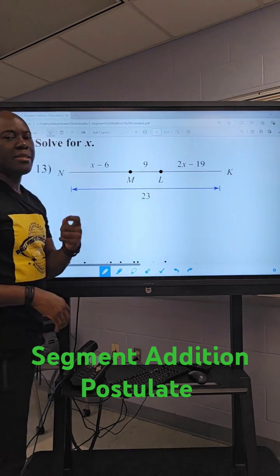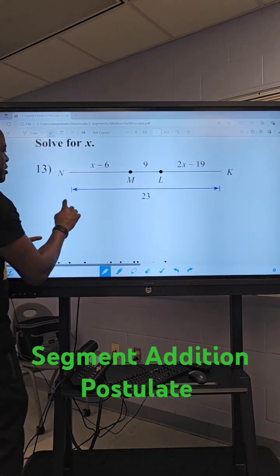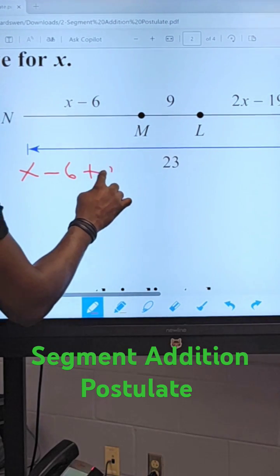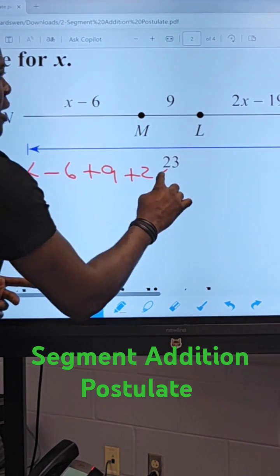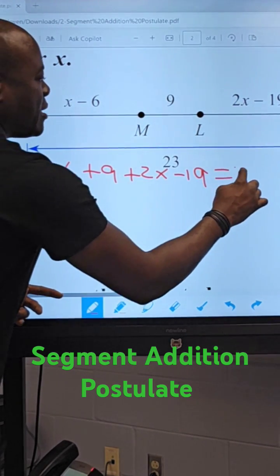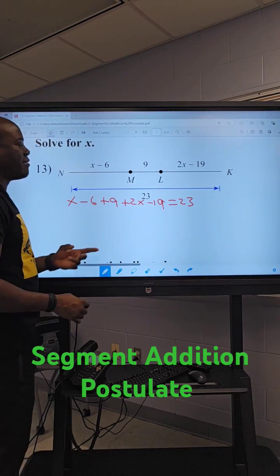Based on the segment addition postulate, we could say x minus 6 plus 9 plus 2x minus 19 equals 23. We're trying to find the value of x.